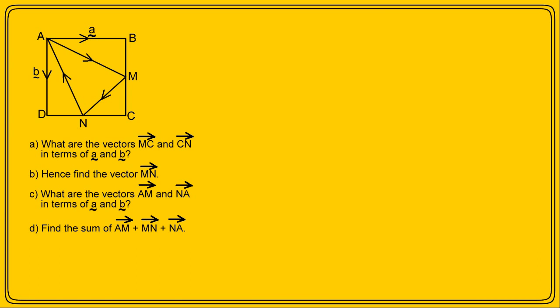We know that the vector BC is parallel and equal in length to the vector AD, so BC must be vector b too. Now MC is simply half of this, so MC is a half of vector b. Similarly, vector DC is the same as vector AB, so that must be vector a too. But we need vector CN, which is half of vector DC and is in the opposite direction, so CN must be minus a half of a. Well, that wasn't too difficult.